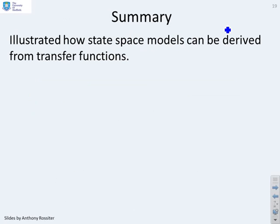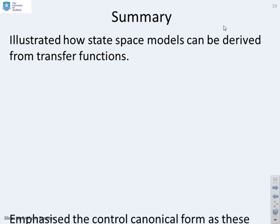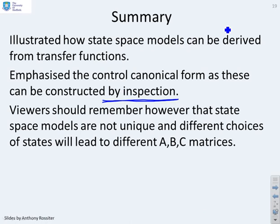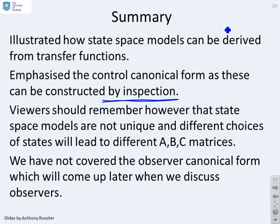So in summary, we've illustrated how states-based models can be derived from transfer functions. We've emphasised the control canonical form as these can be constructed by inspection. But viewers should remember that the states-based models are not unique and different choices of states will lead to different choices for the A, B, C matrices. We've not covered observer canonical forms and these will come up later when we discuss observers.